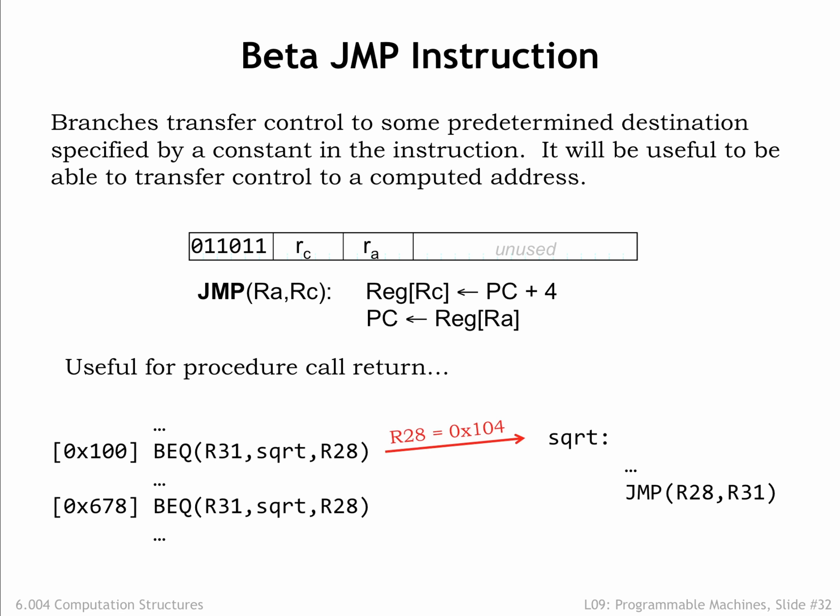The first call to the square root procedure is implemented by the unconditional branch at location 0x100 in main memory. The branch target is the first instruction of the square root procedure, so our execution continues there. The BEQ also writes the address of the following instruction, 0x104, into its destination register, R28.